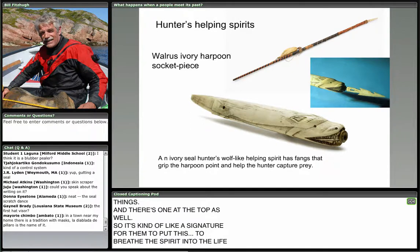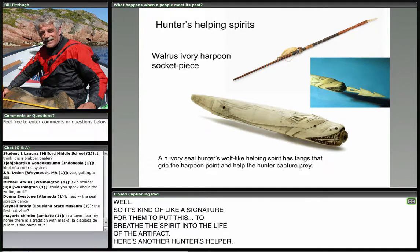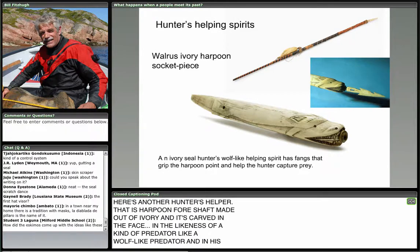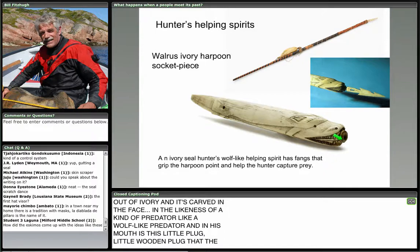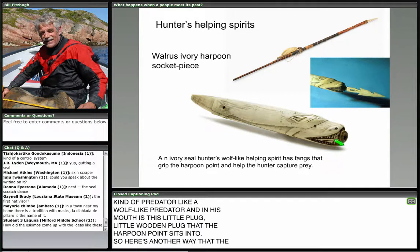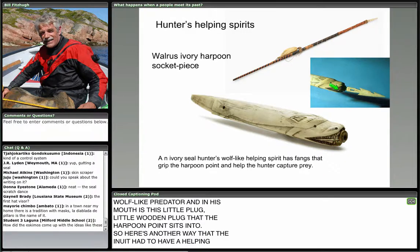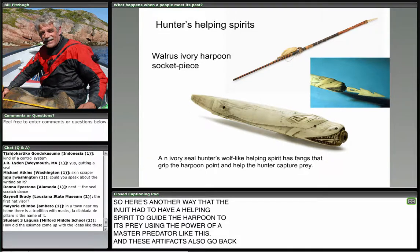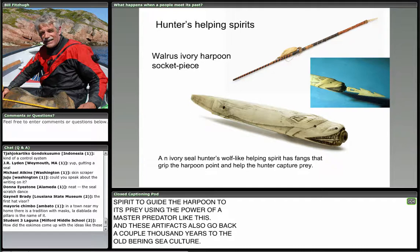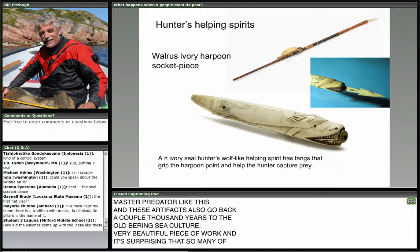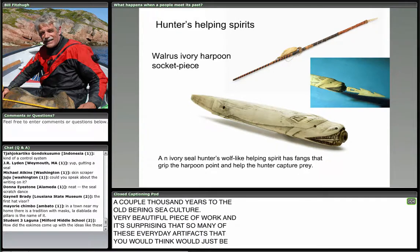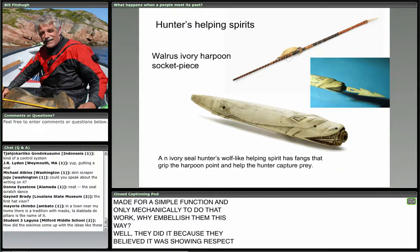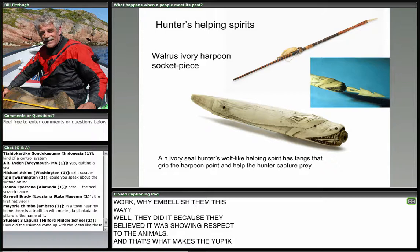Here's a hunter's helper — a harpoon foreshaft made out of ivory, carved in the likeness of a predator like a wolf. In its mouth is a little wooden plug that the harpoon point sits into. This is another way the Inuit had a helping spirit to guide the harpoon to its prey using the power of a master predator. These artifacts also go back a couple thousand years to the old Bering Sea culture. It's surprising that so many everyday artifacts you'd think were made just for simple function are embellished this way — they did it because they believed it showed respect to the animals, which makes Yupik culture so surprisingly artistic and rich in content.